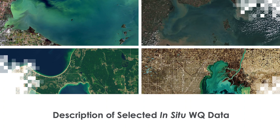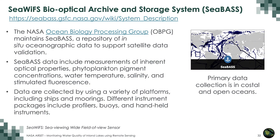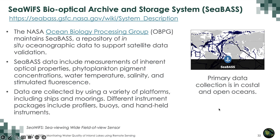With that background, we'll now look at selected in-situ water quality datasets that may be used for developing algorithms for inland water quality parameters. One such resource is SEABASS — the SeaWiFS Bio-optical Archive and Storage System — a NASA system maintained by the NASA Ocean Biology Processing Group. It maintains a repository of in-situ oceanographic data to support satellite data validation. SEABASS data include measurements of inherent optical properties, phytoplankton pigment concentration, water temperature, salinity, and stimulated fluorescence. Data are collected using ships and moorings with profilers, buoys, and handheld instruments. SEABASS data are primarily collected in coastal and open oceans.